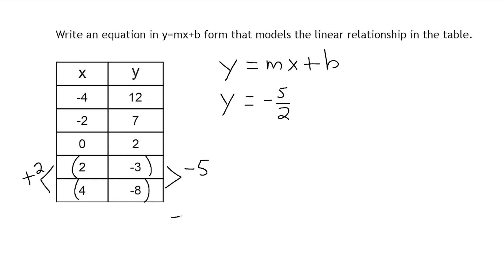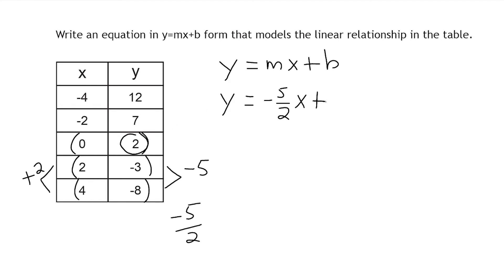Remember, if one of your two numbers is negative and one is positive, the entire value is negative. Now, since we have a point in the table where 0 is the x-value, the corresponding y-value is our y-intercept. So at the end of our equation we simply write plus 2. This is the equation that represents the linear relationship found in this particular table.